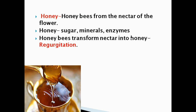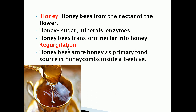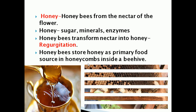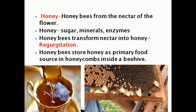This process is called regurgitation. Honey bees will transform the nectar of the flower into honey — such process is called regurgitation. After converting the nectar into honey, honey bees will store it as a primary food source in honey combs inside beehives. In the picture you can see the honey bee and the honey combs in which the honey is stored as primary food.